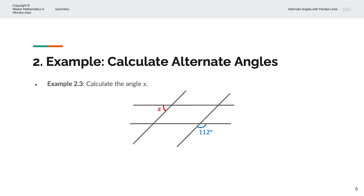In the third example, we're asked to calculate angle X. We're given two pairs of parallel lines: the first pair is this line parallel to this line, and the second pair is this line parallel to this line. We're given 112 degrees here and asked to find X. We can recognize that 112 degrees has a corresponding angle here, which is also equal to 112 degrees — that's the F-shape formed by this line, this line, and this line. We know that X and Y are alternate angles because it traces out the Z-shape.